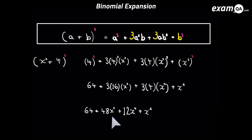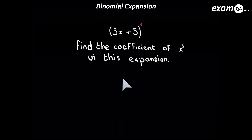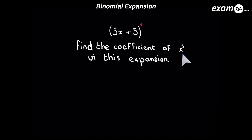Binomial expansion doesn't look too difficult, but you must go ahead and practice a lot of questions. Let's look at our final question: 3x plus 5 to the power of 5, and the question wants the coefficient of x cubed in this expansion. Some of you might want to expand it all out and simplify, but that's going to be terribly long. Since the question only wants the coefficient of x cubed, we can actually do a shortcut and we don't need to do the full expansion.